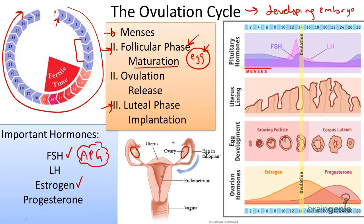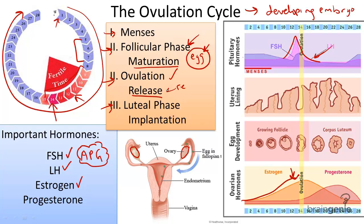Next, let's think about the release of an ovum — this is called ovulation. On approximately day twelve of the cycle, extremely high levels of estrogen stimulate the brain to release a great deal of a hormone called luteinizing hormone. Luteinizing hormone causes one egg to release, usually on day fourteen of the cycle, causing ovulation or release.